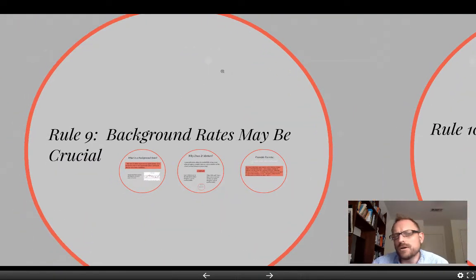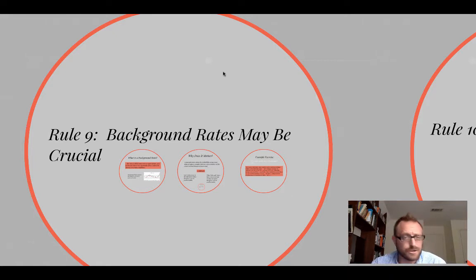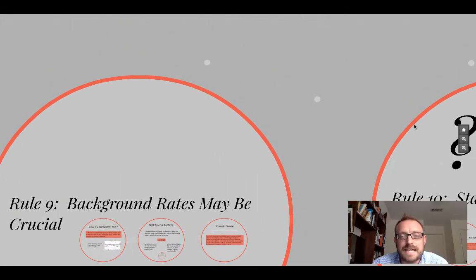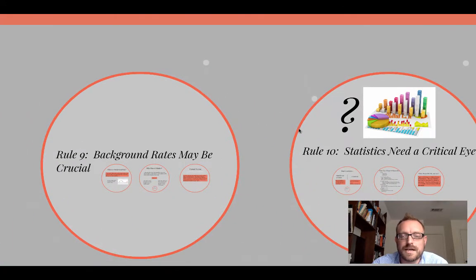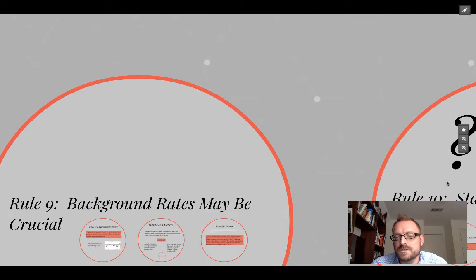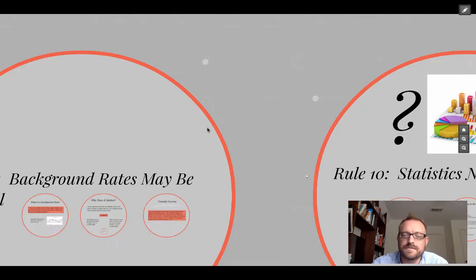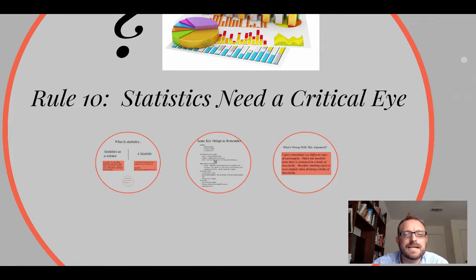And in the last video, we looked at the idea that background rates are also pretty important. Because if we're going to understand a generalization, especially when we're talking about the frequency of things occurring, you have to know what's normal in order to understand whether or not a generalization holds. I'm not going to go through that, but you can take a look at the video series that we looked at last time, that's posted as part of the playlist here. So what are we looking at today?